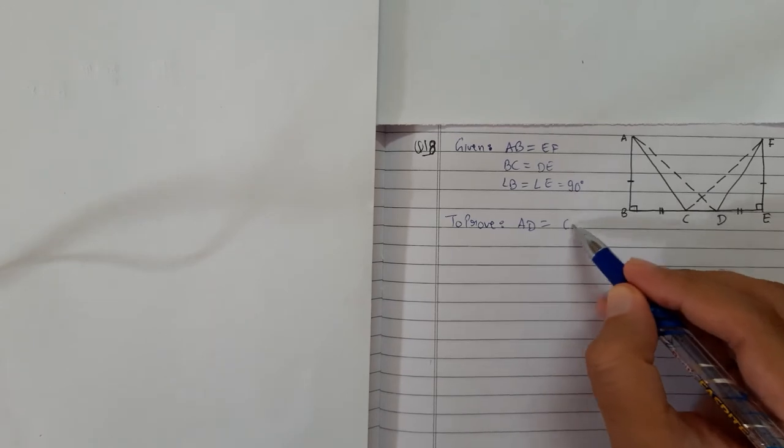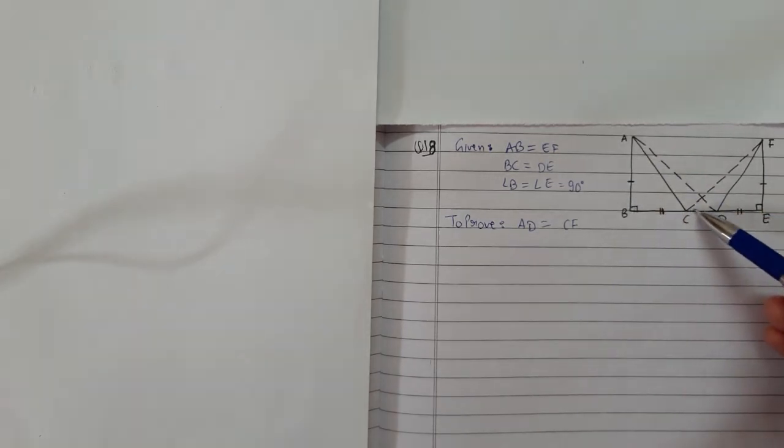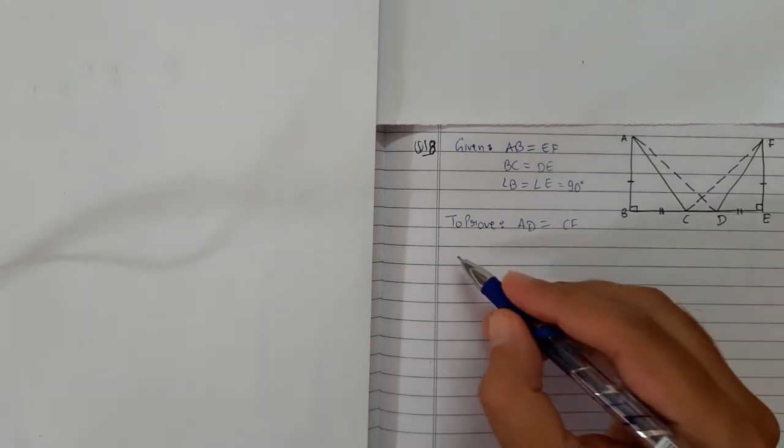Now you may pause the video and think: which triangle should I take? Let me give you a hint. Should I take triangles ABC and DEF, or ACD and FDC, or label this point as O and take ACO and ODF? So much confusion.